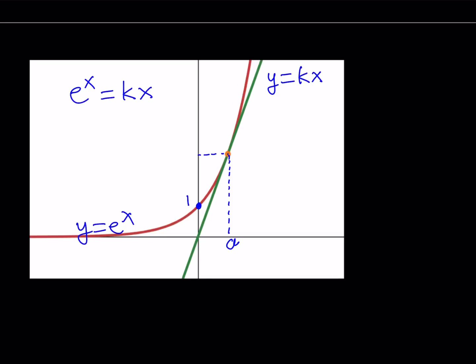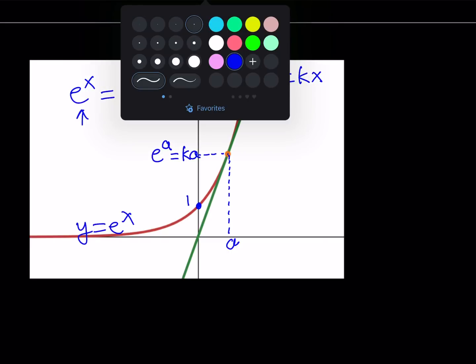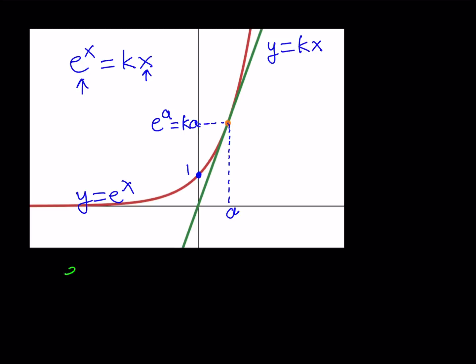There are two possible values for the y-value, because if you plug in x equals a here, you get e to the power a for the y-coordinate. If you plug in x equals a here, you get ka, but that means that those two values are equal. So we got our first equation, which is kind of nice. We can write it as e to the power a equals ka. This comes from the fact that these two functions intersect at a single point.